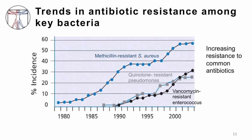Looking at the trends over the last two or three decades, Staphylococcus aureus — shown as the blue line — was actually very infrequently resistant to an antibiotic called methicillin, though we now use napicillin. Resistance rates have gone over 50% for all Staphylococcus aureus isolates in the United States. Pseudomonas, a gram-negative organism that can cause severe infections often in hospital settings, is showing rising resistance rates to the only oral antibiotic that can be used for it. And Enterococcus, which lives in the gut, has become resistant to a very powerful antibiotic called vancomycin. All of these have been increasing over time and continue to rise.